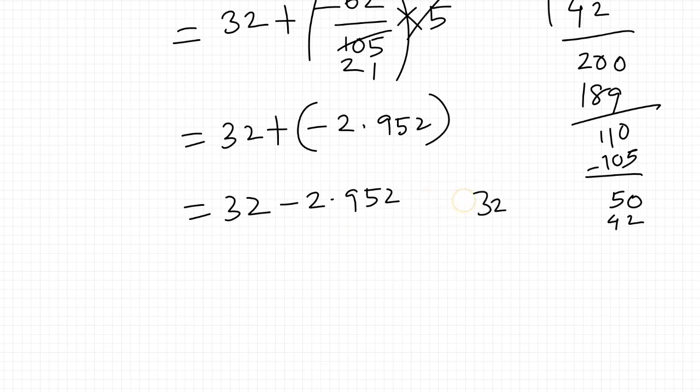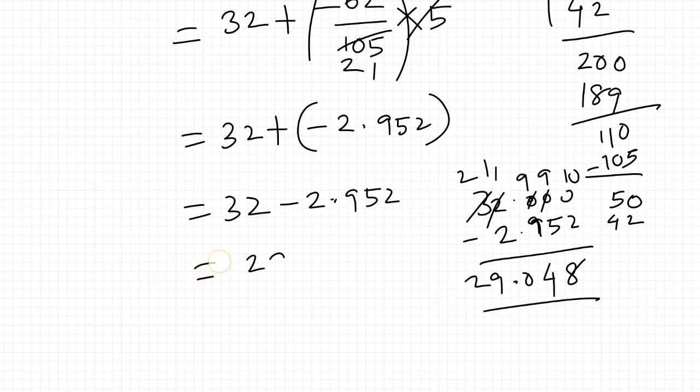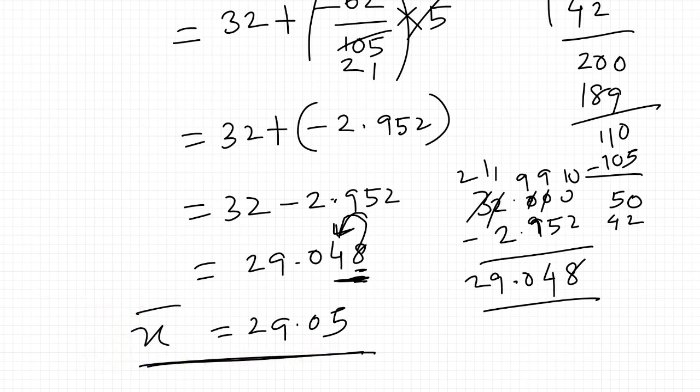32 minus 2.952. We need to borrow: 10 minus 2 is 8, 9 minus 5 is 4, 9 minus 9 is 0, 11 minus 2 is 9, last one is 2. So 29.048. Rounding to two decimal places, mean equals 29.05.